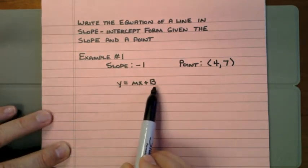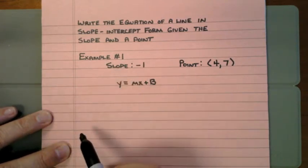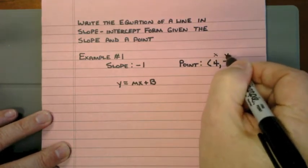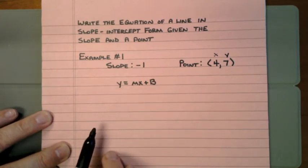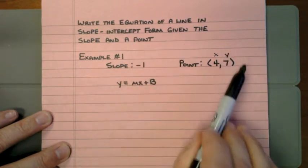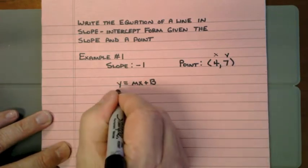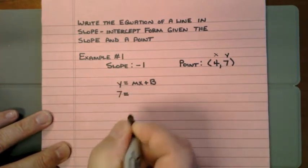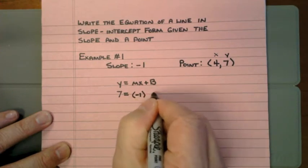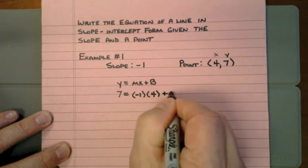We're going to use this formula to figure out the y-intercept because that's the only thing we're missing — we've got the slope. A point consists of an x and a y, and our formula has an x and a y in it. So I'm going to take the y, which is 7, and plug it in. Then I take the slope, negative 1, and multiply it to the x value, which is 4, plus b.